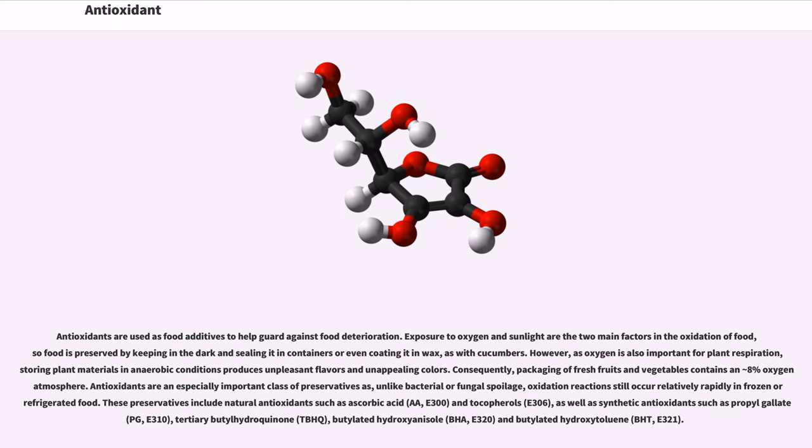Antioxidants are used as food additives to help guard against food deterioration. Exposure to oxygen and sunlight are the two main factors in the oxidation of food, so food is preserved by keeping in the dark and sealing it in containers or even coating it in wax, as with cucumbers. However, as oxygen is also important for plant respiration, storing plant materials in anaerobic conditions produces unpleasant flavors and unappealing colors. Consequently, packaging of fresh fruits and vegetables contains approximately 8% oxygen atmosphere. Antioxidants are an especially important class of preservatives as, unlike bacterial or fungal spoilage, oxidation reactions still occur relatively rapidly in frozen or refrigerated food.